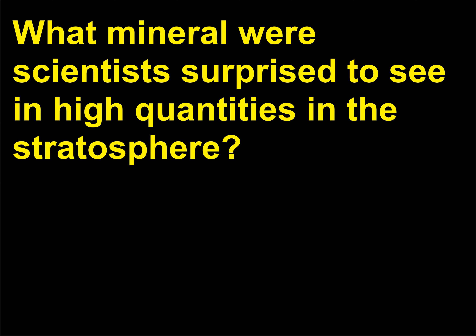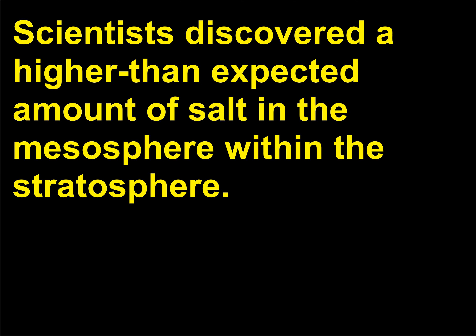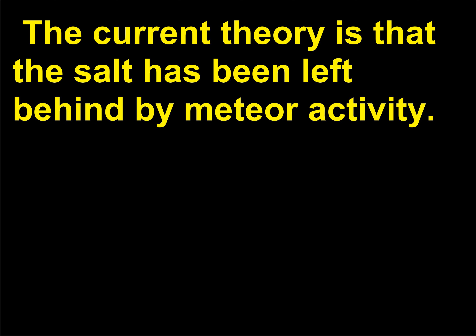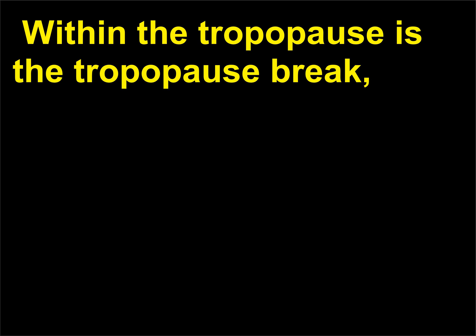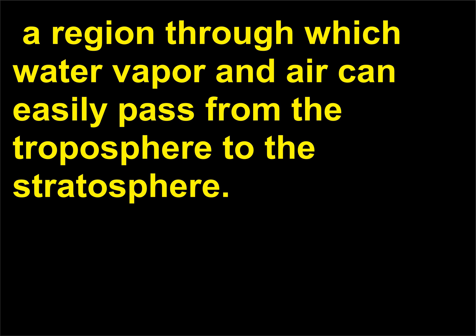What mineral were scientists surprised to see in high quantities in the stratosphere? Scientists discovered a higher than expected amount of salt in the mesosphere within the stratosphere. The current theory is that the salt has been left behind by meteor activity. The tropopause is the layer between the troposphere and the stratosphere that hovers around 10 miles (16 kilometers) above the ground. Within the tropopause is the tropopause break, a region through which water vapor and air can easily pass from the troposphere to the stratosphere.